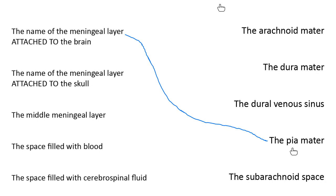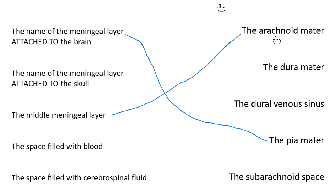Just above the pia mater, the next layer — the middle layer — is called the arachnoid mater. This one gets its name because it looks like spider webs; you'll see some collagen fibers that hang down from it. That's the arachnoid mater, which means my last meningeal layer — the thickest one, also directly attached to the skull — is called the dura mater.